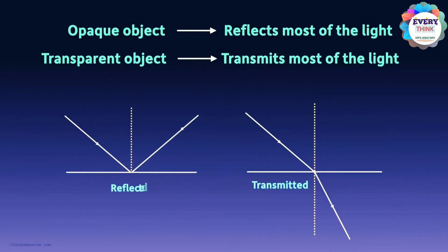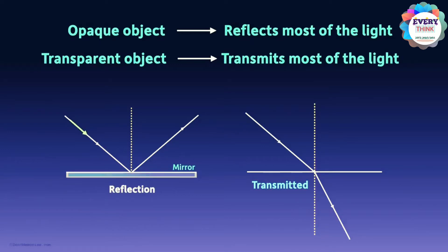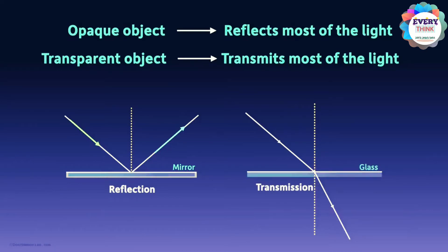The surface of a mirror is shiny and opaque, and most of the light rays are reflected from it. On the other hand, glass is an example of a transparent object — it will transmit most of the light.